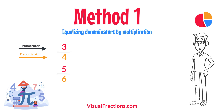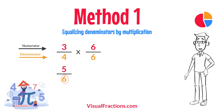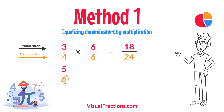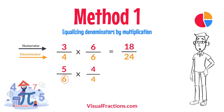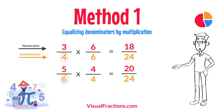For 3 quarters, multiply both the numerator and the denominator by 6 — the denominator of 5 sixths. This gives us 18 twenty-fourths. For 5 sixths, multiply both the numerator and the denominator by 4 — the denominator of 3 quarters. This results in 20 twenty-fourths.